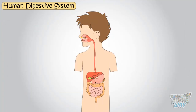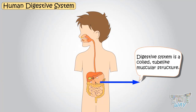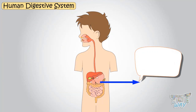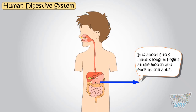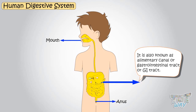Kids, we know the digestive system is a coiled tube-like muscular structure which is about 6 to 9 meters long. It begins at the mouth and ends at the anus. It is called the alimentary canal and also gastrointestinal tract or GI tract.